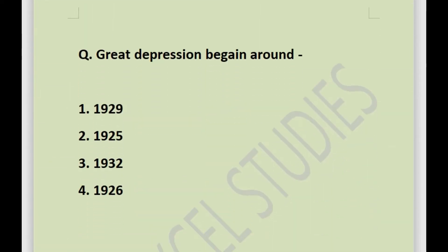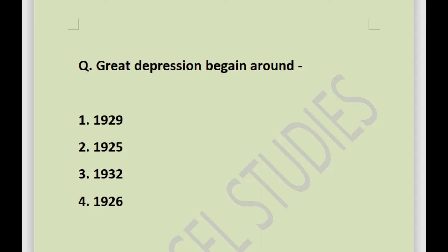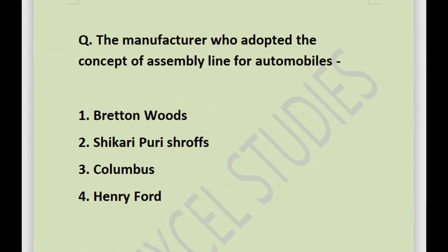Next question: the Great Depression began around — options are 1929, 1925, 1932, or 1926. The answer is 1929. The Great Depression began around 1929, after the First World War, and it created a lot of havoc among the countries.